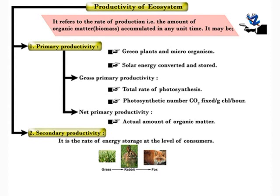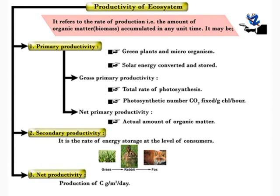Secondary productivity is the rate of energy storage at the level of consumers. Consumers use food material directly or indirectly from the producer and convert it into different forms. Net productivity is equivalent to net primary production minus consumption by heterotrophic organisms. It is expressed as production of C grams per m² per day.